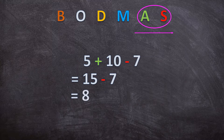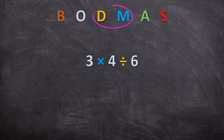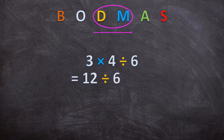Now let's look at the next example. Here we have multiplication and division. It doesn't matter in which order they appear — we know when we have them both, we go from left to right. So first we multiply: 3 times 4 is 12. Then we divide: 12 divided by 6 is 2.